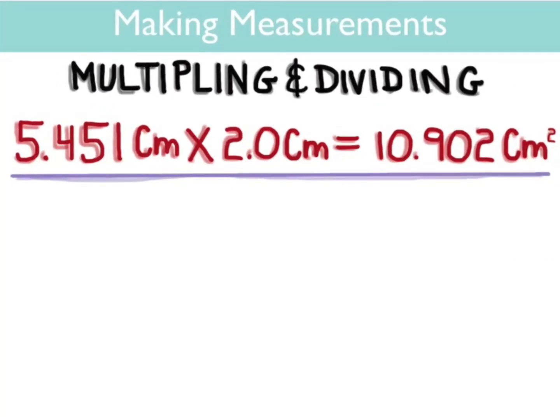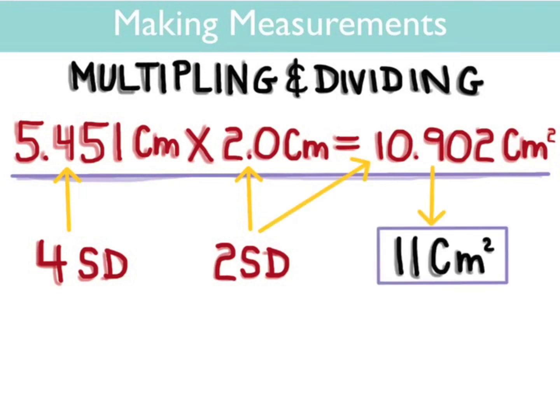There's a second rule for multiplication and division. Suppose you're trying to find the area using these two measurements and the calculator gives you an answer of 10.902. The rule for multiplication and division is more drastic than that for addition and subtraction. You need to round your answer down to the lowest number of significant digits used to get your answer. In this case, two significant digits in the measurement 2.0 centimeters. So your answer needs to be rounded down to 11 centimeters squared.